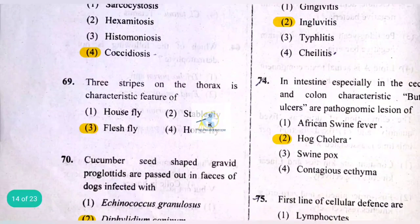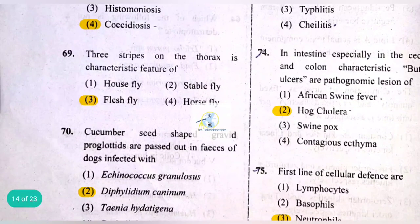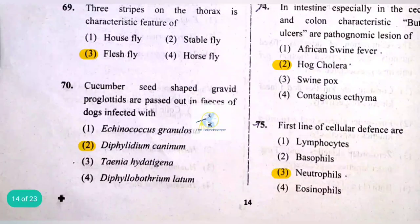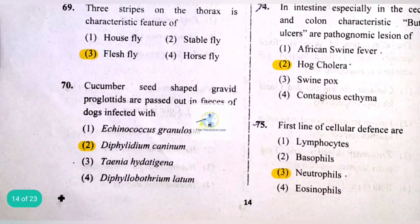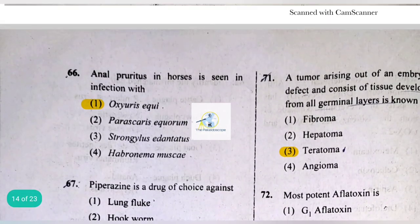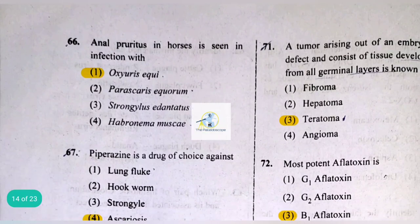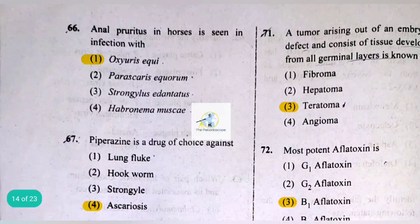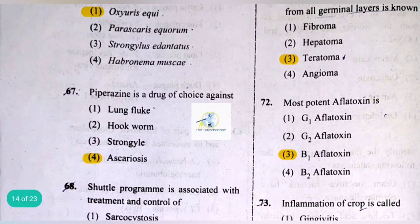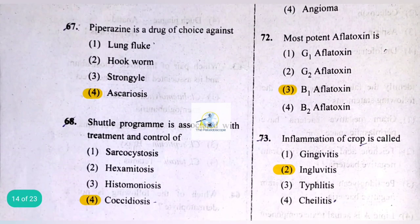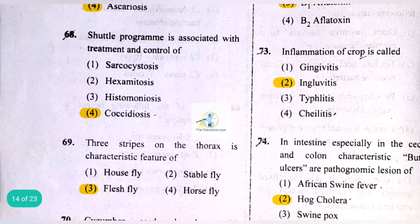Three stripes on the thorax is a characteristic feature of the flesh fly. Cucumber seed-shaped gravid proglottids are passed out in feces of dogs infected with Dipylidium caninum. A tumor arising from an embryonic defect consisting of tissue from all germinal layers is known as a teratoma. The most potent aflatoxin is B1.